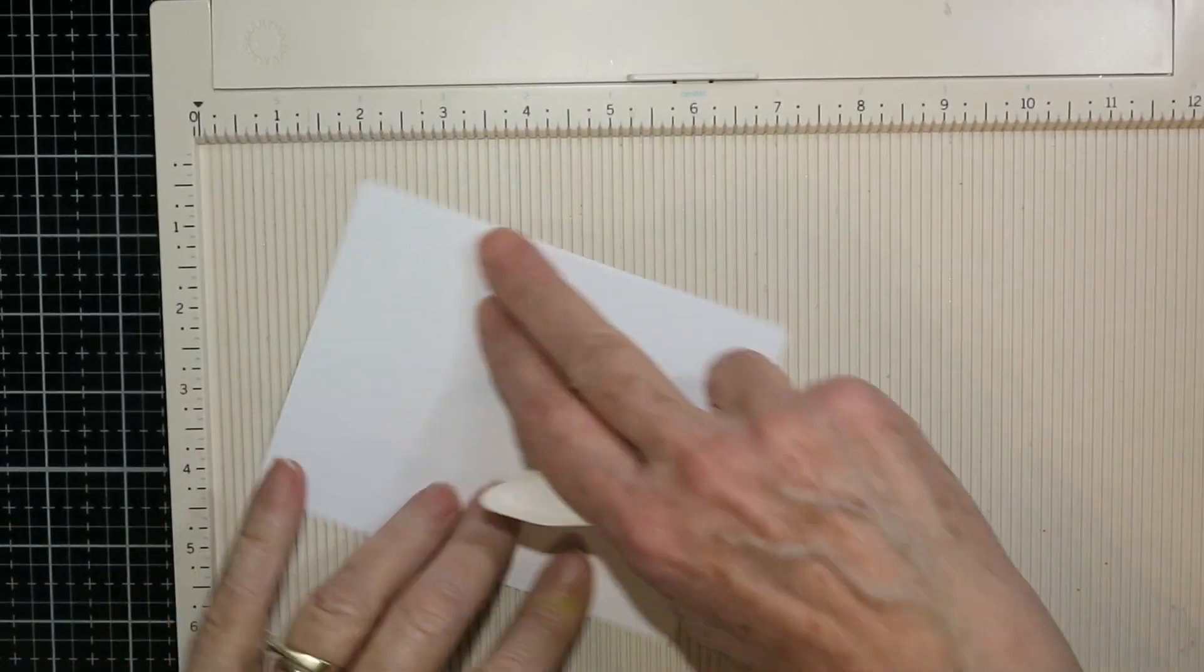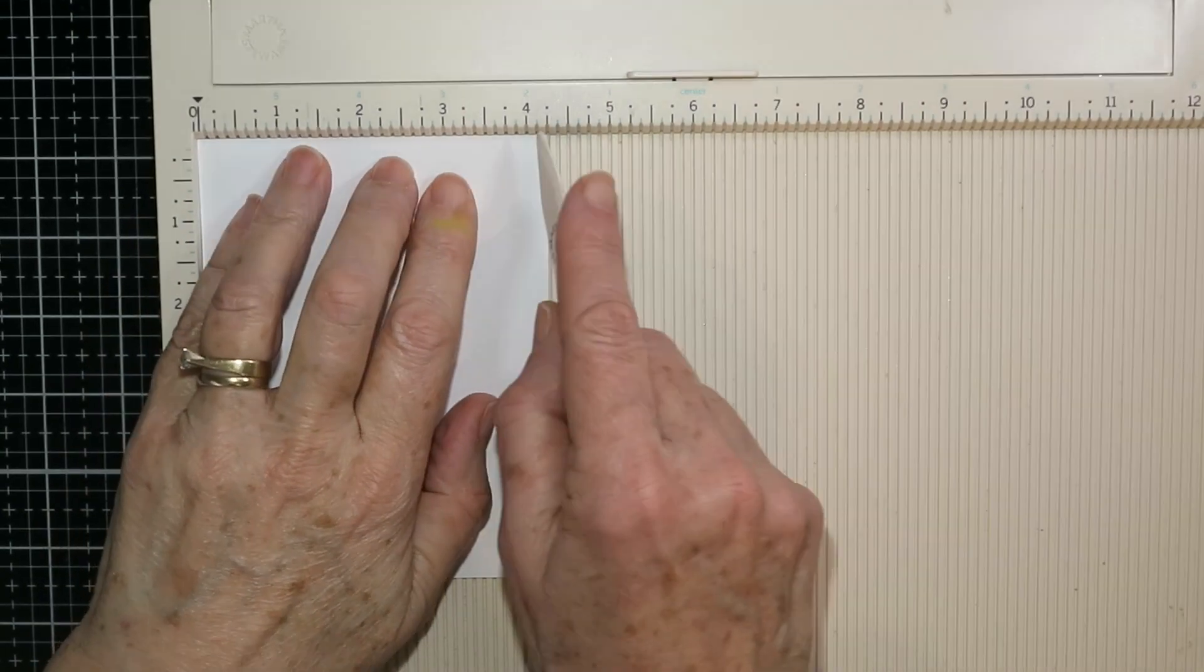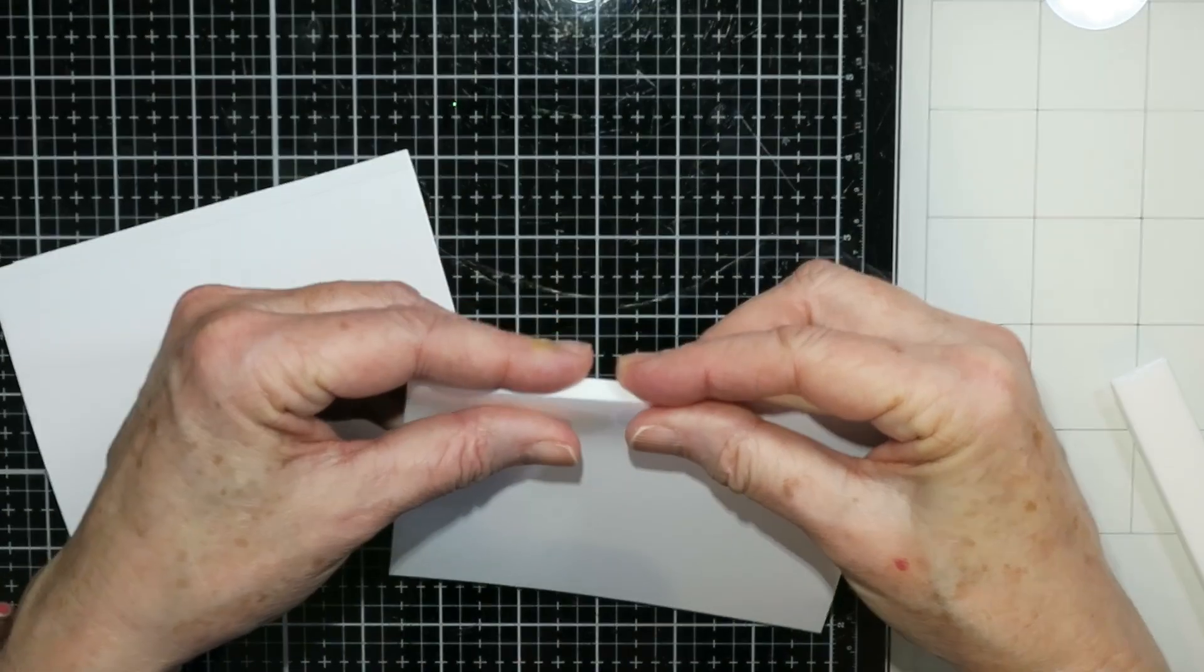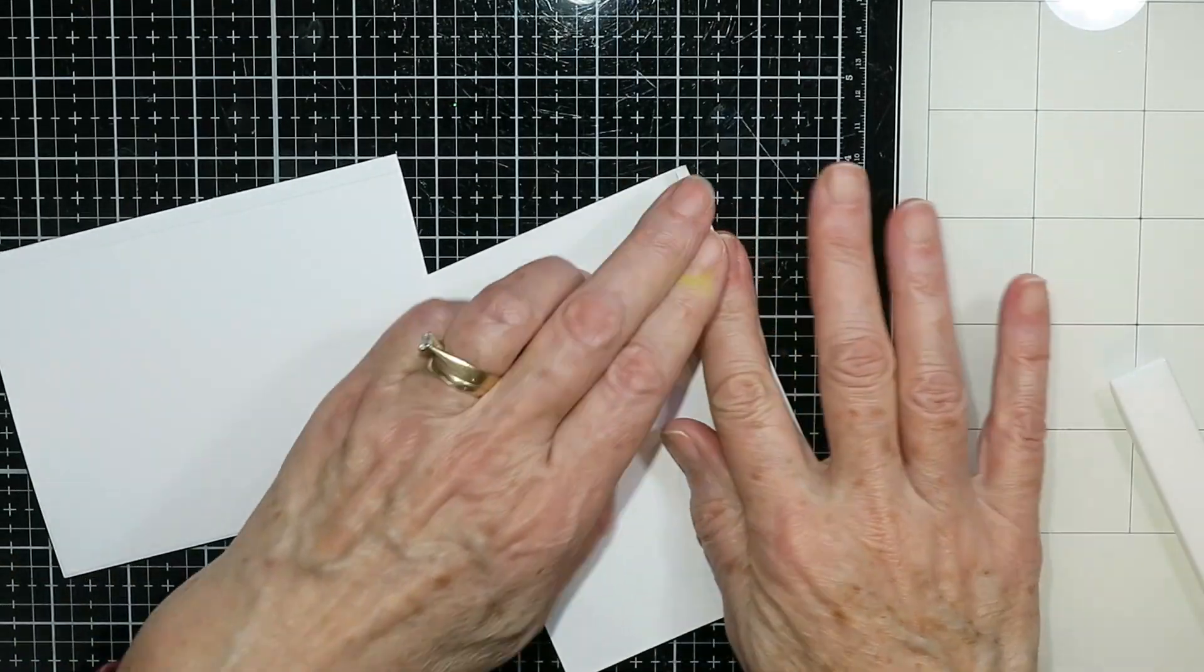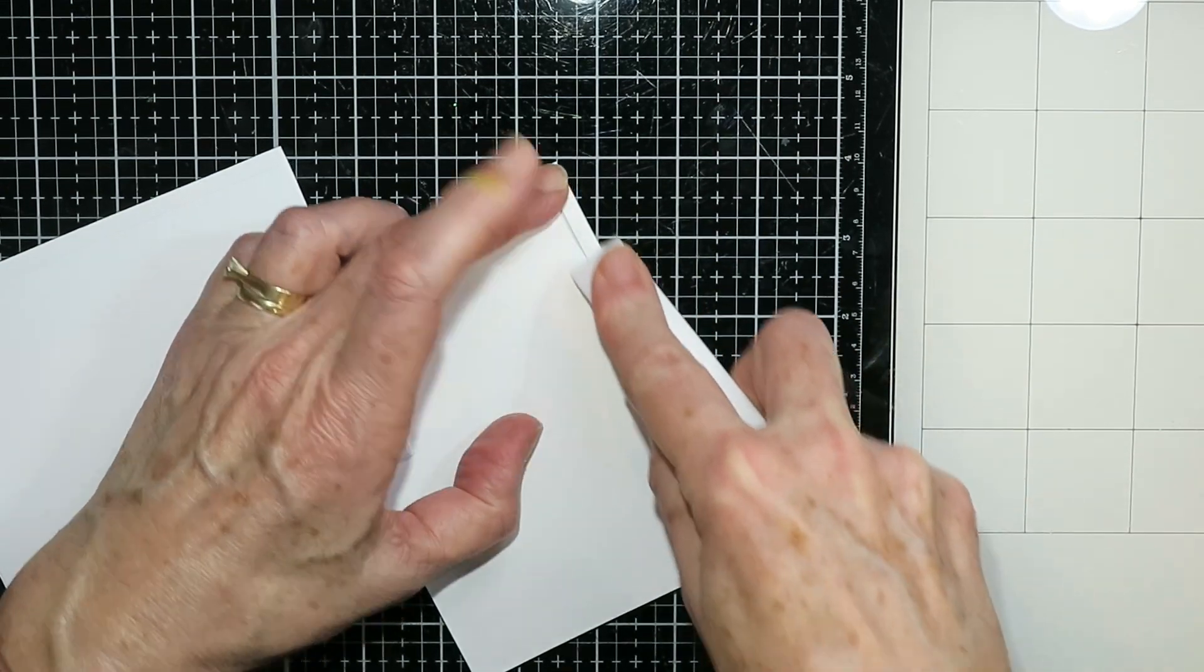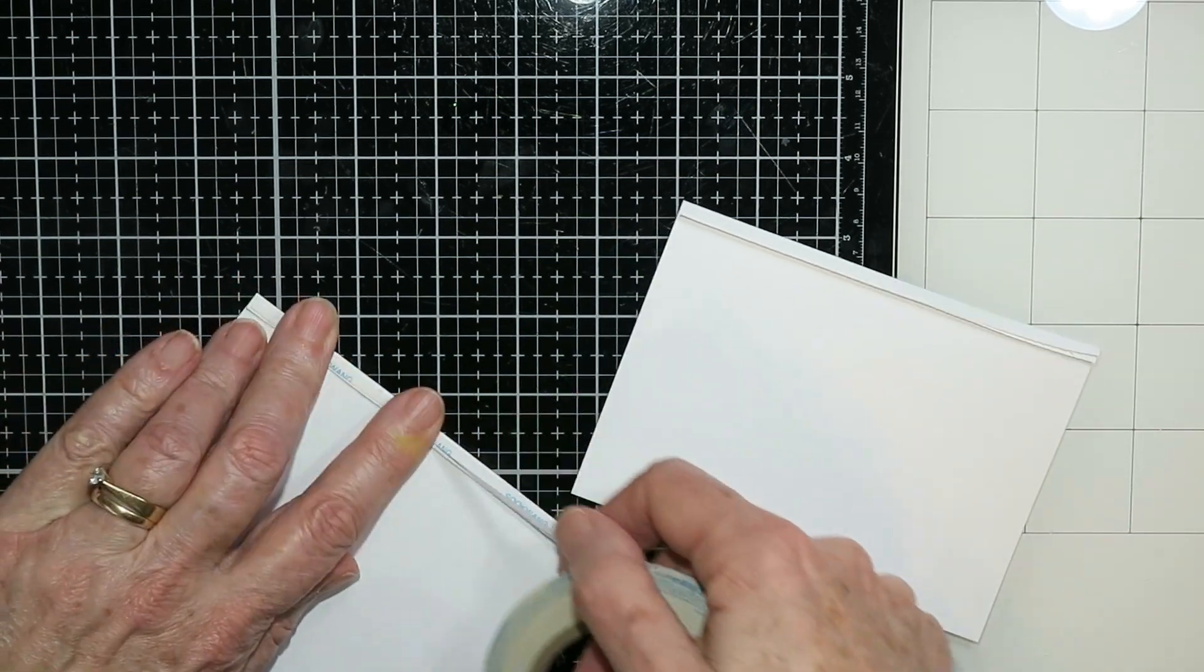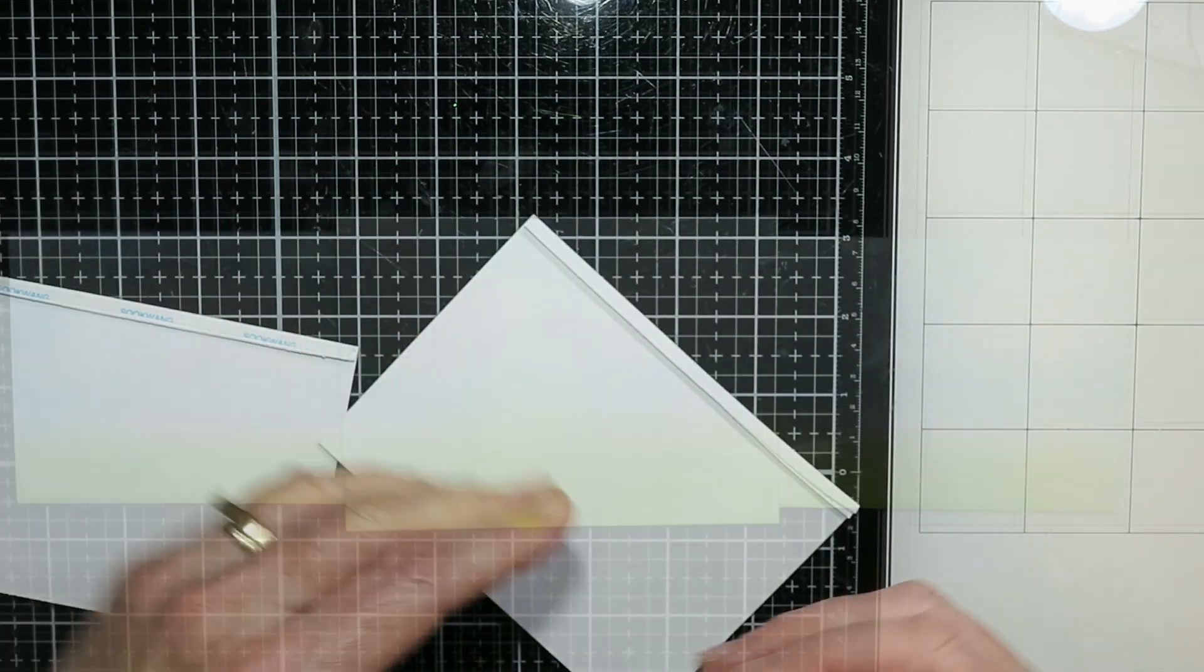These larger ones, the five and a half by four and a quarter, will be the front and the back. You can see I'm just scoring it there a quarter of an inch in so it ends up being four inches tall, this card. I'm folding those fold lines backwards and down and I'm putting double-sided tape along those. Now these will be the front and the back of the card. So both of them will get the tape on them.